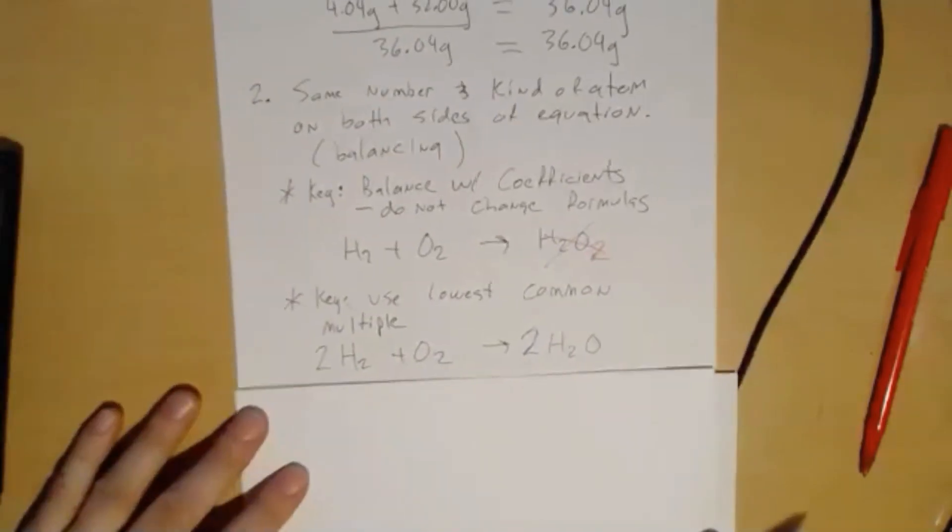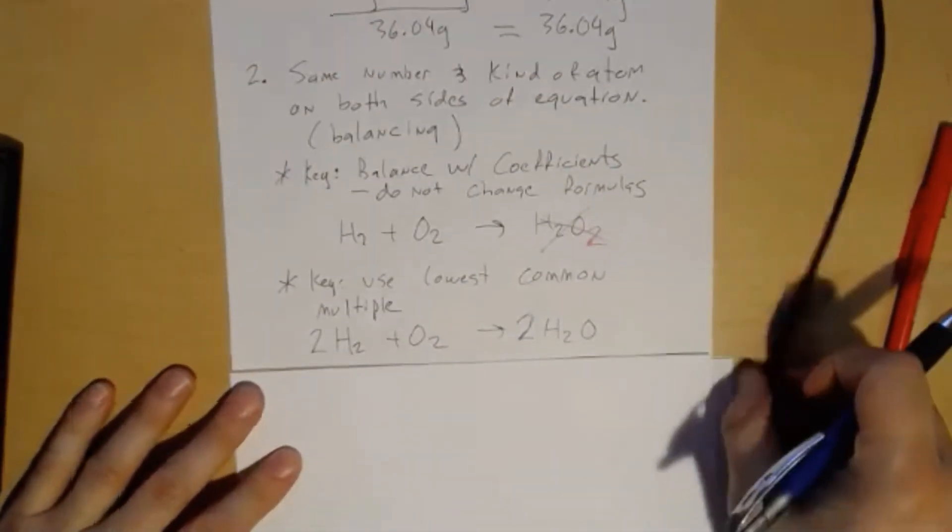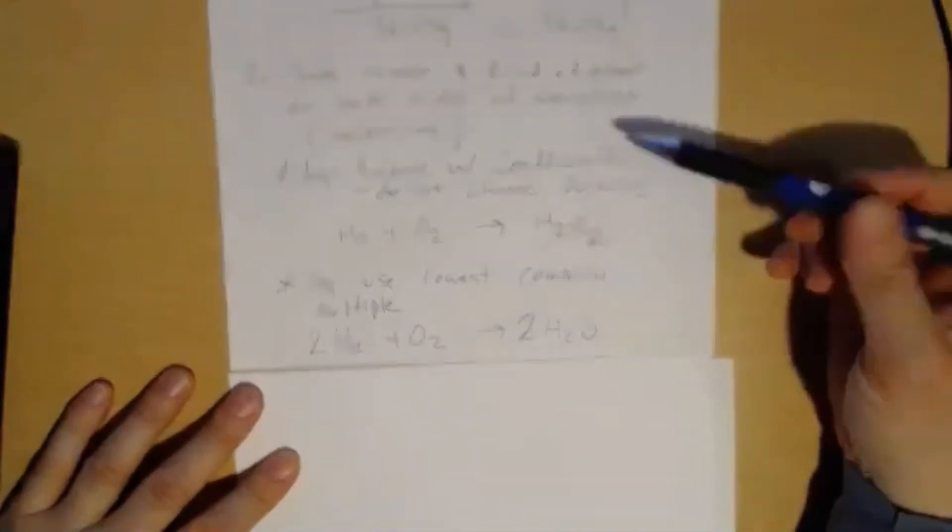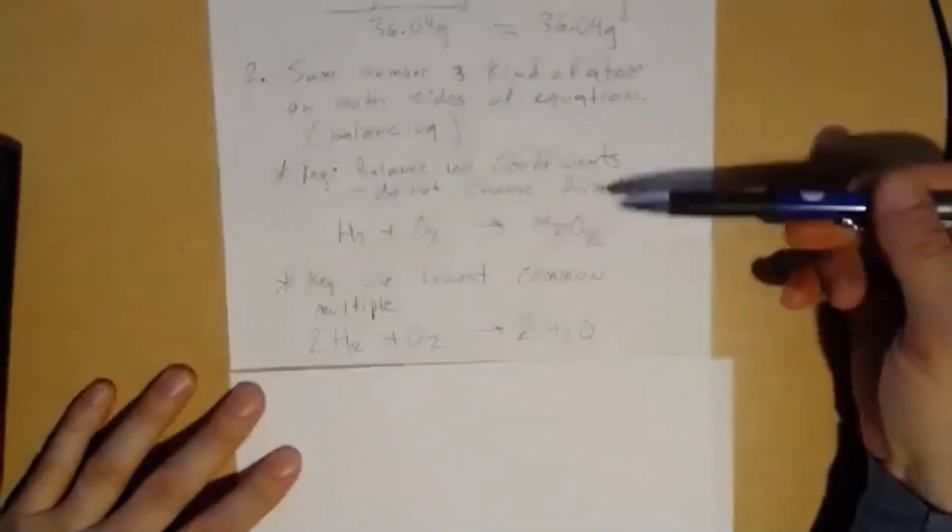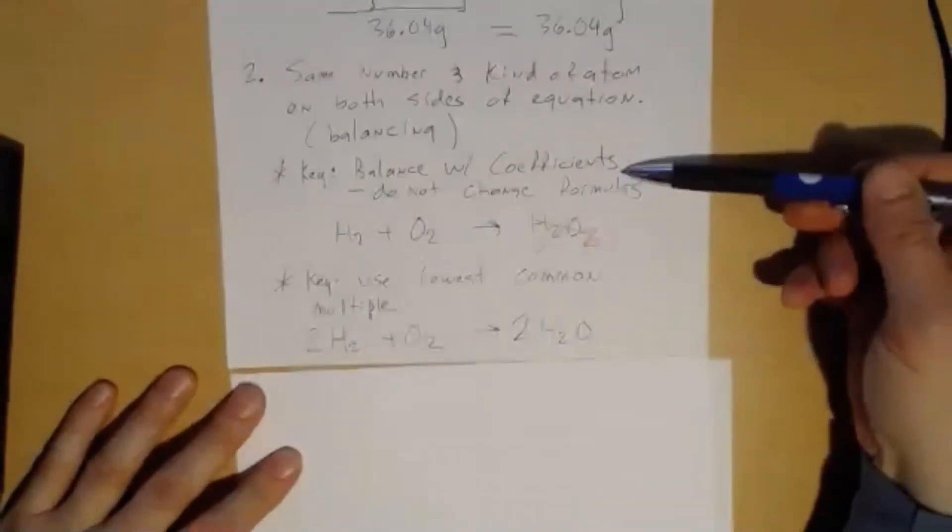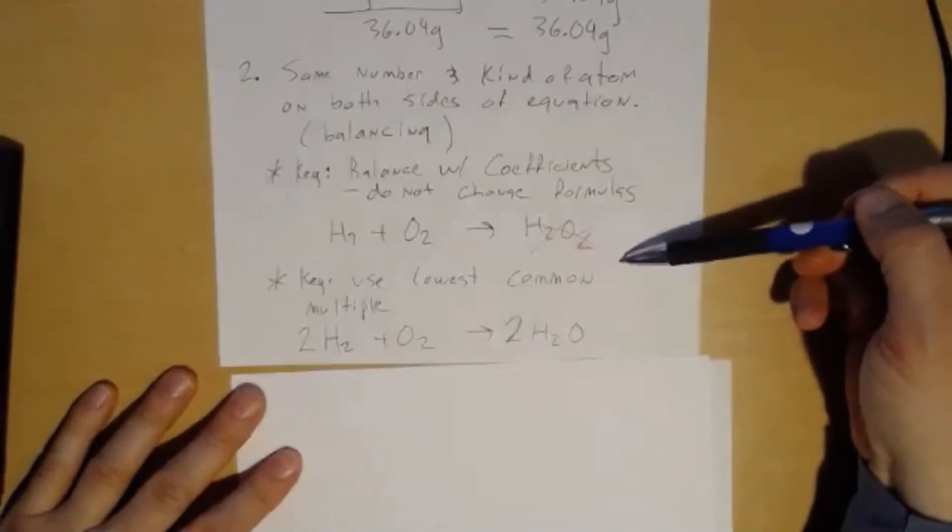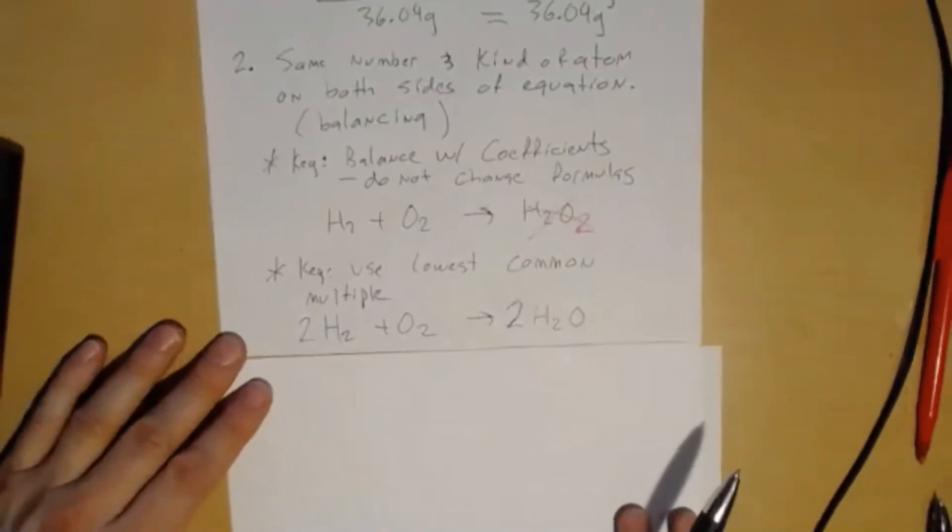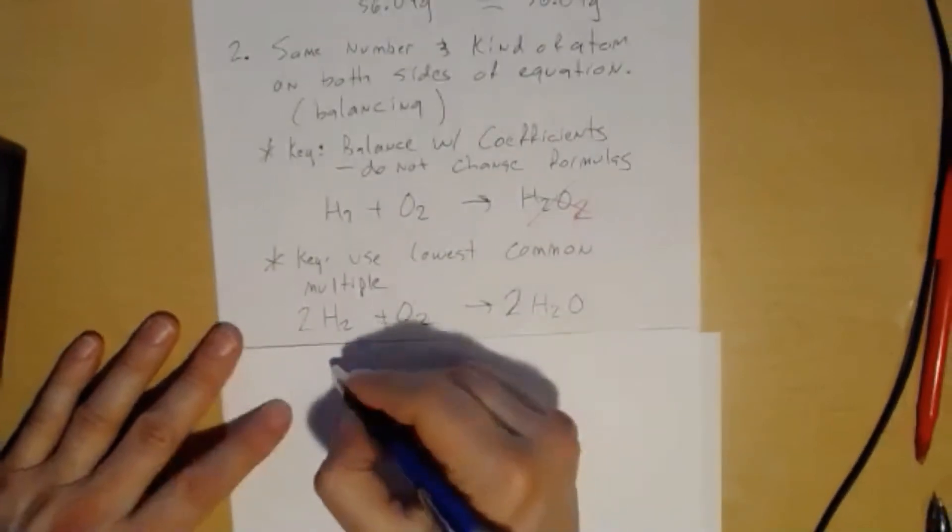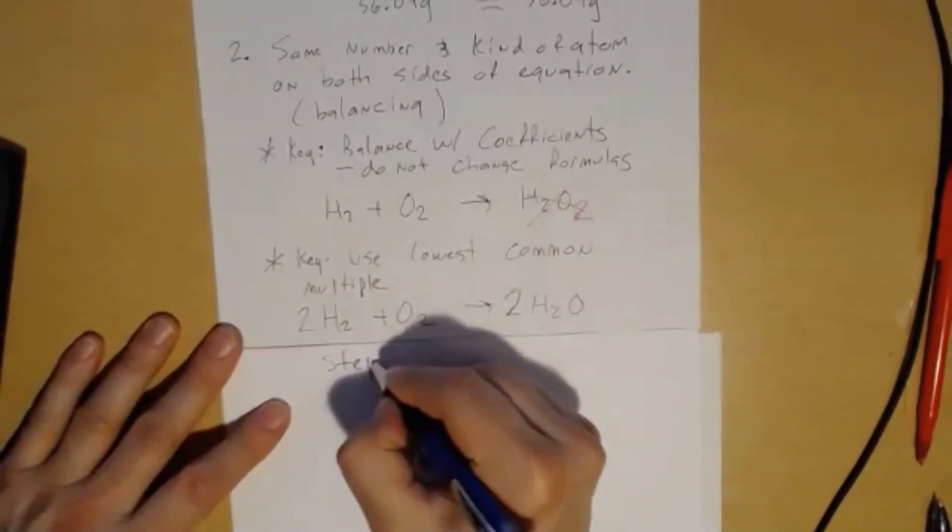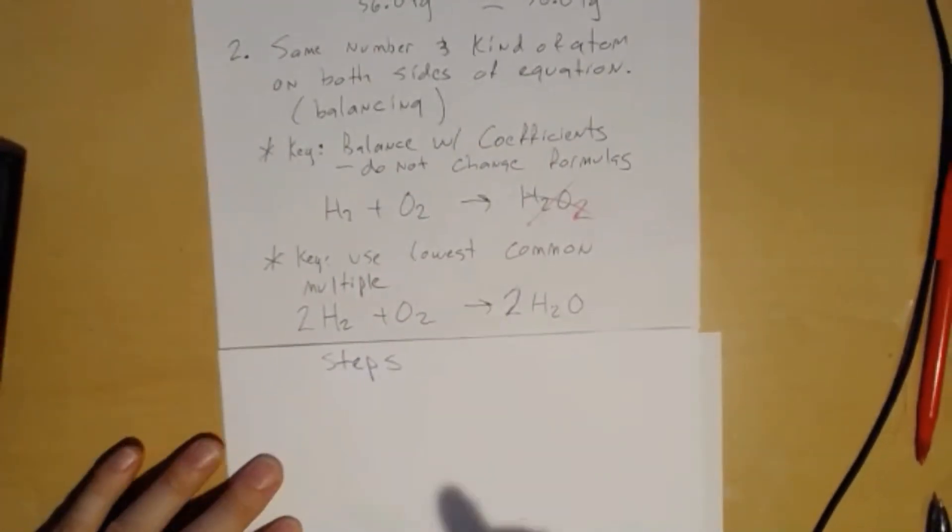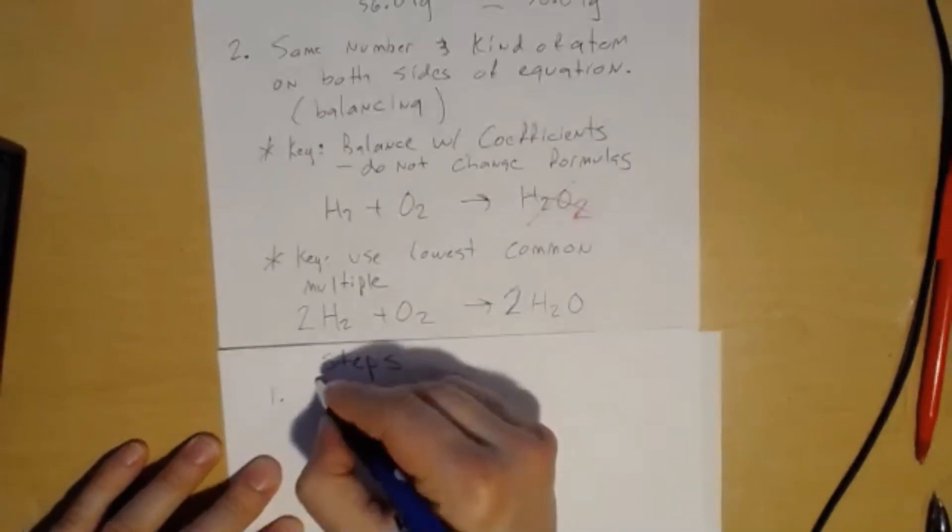So that one's a straightforward one. Let's do a few others of these just for some practice. So again, you got to follow these as your guiding: keep balance of coefficients, do not change formulas, keep the lowest common multiple. And then usually the steps that I follow when I'm balancing is: one, I balance metals.